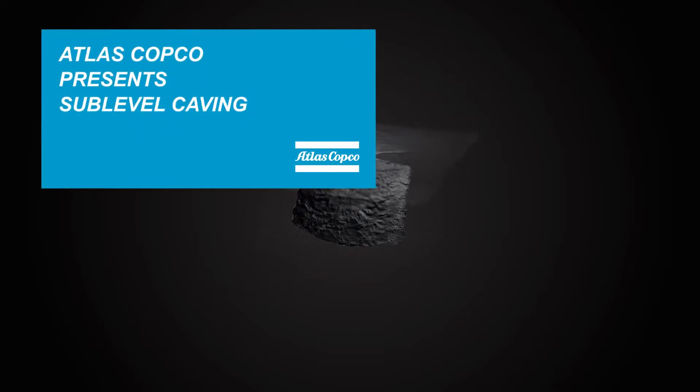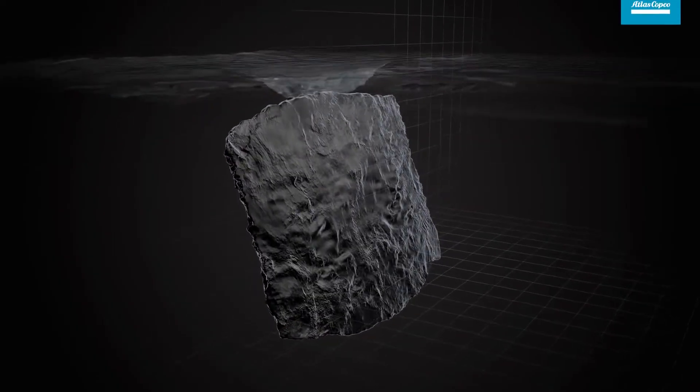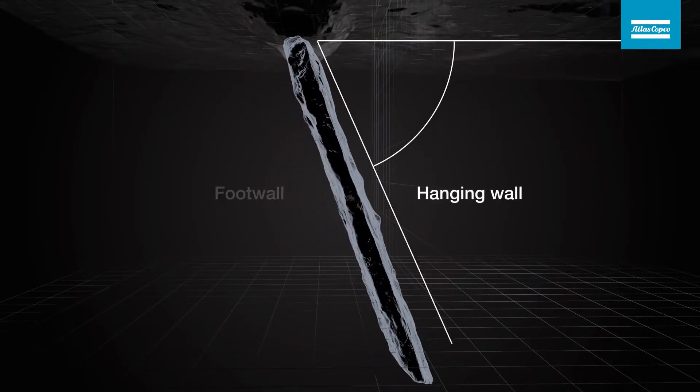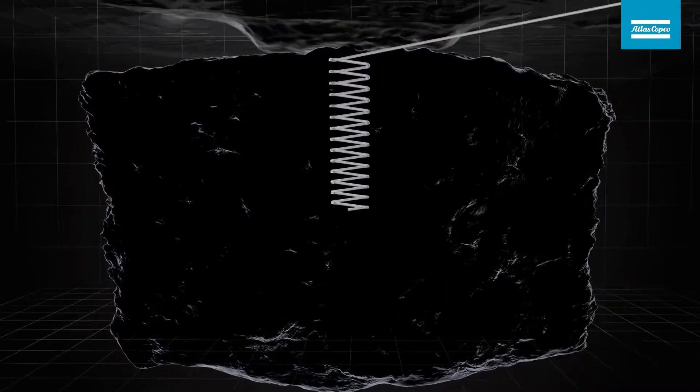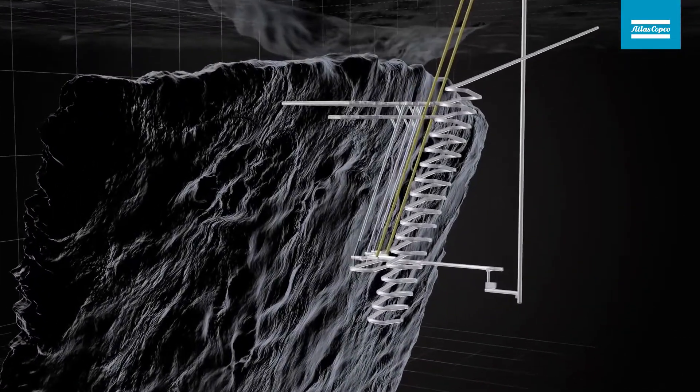Sub-level caving is a large-scale mining method suitable for large ore bodies with a steep dip and a rock mass where the host rock in the hanging wall will fracture under controlled conditions. Therefore, the infrastructure is always placed on the footwall side.